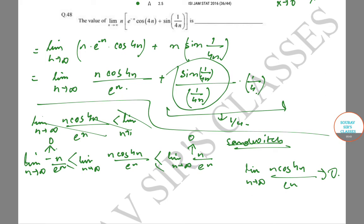This limit as n goes to infinity of n·cos(4n)/eⁿ goes to 0, and so the entire limit goes to 1/4. This is the end of the question, and next up we'll move on to the next question.